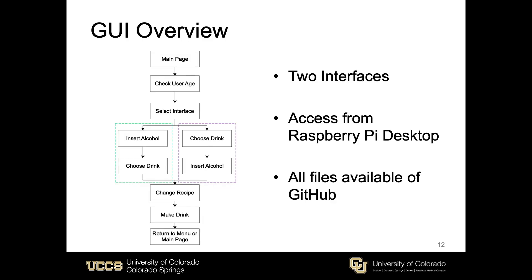Prior to showing the GUI demonstration, we'll quickly go over what we're about to see. The GUI has two interfaces, accessed from the Raspberry Pi desktop by double-clicking an executable file. All project files are available on GitHub, with the link shown at the end of the presentation. In the demonstration we'll navigate through both interfaces: starting from the main page, checking the user's age, selecting an interface, going through it, changing the recipe, making the drink, returning to the main menu, and then going through the other interface.